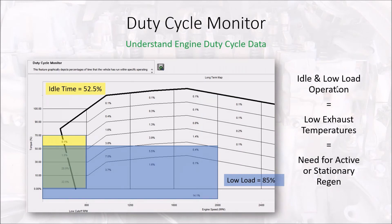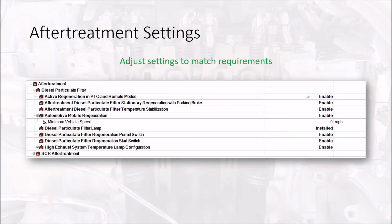Idle and low load operation means low exhaust temperatures, which means there's a need for active or stationary regens to take place on a regular basis to reduce the soot load. In order for that to happen automatically — without the operator pulling over to flip the switch on the dash, or a technician running a regen in the parking lot — we need to go into the features and parameters and adjust these settings to match the operating characteristics of that engine.